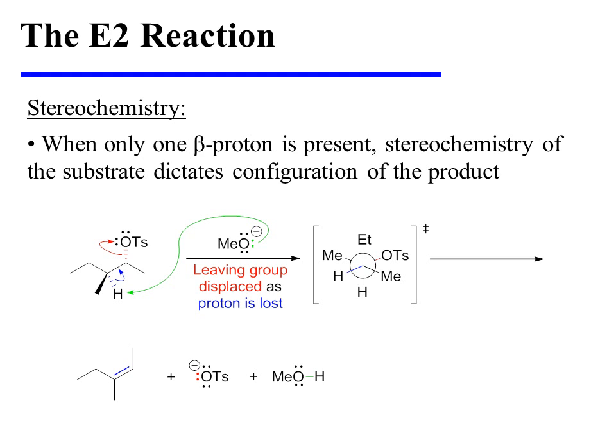When only one beta proton is present, the stereochemistry of the substrate dictates the configuration of the product. For instance, in this specific example, methoxide, a small, strong base, will remove a proton from the more highly substituted beta position, leading to the more highly substituted Zaitsev product.